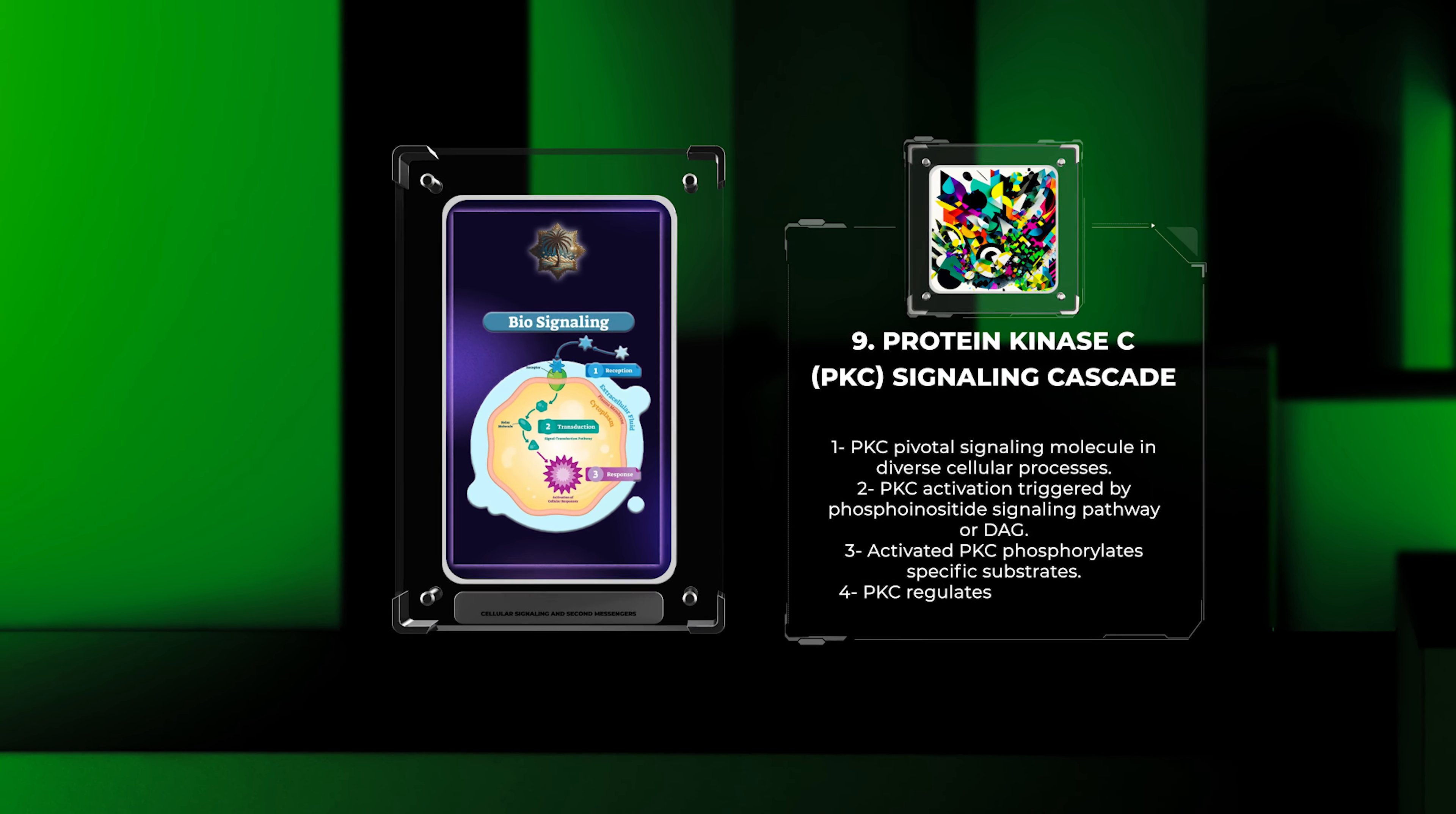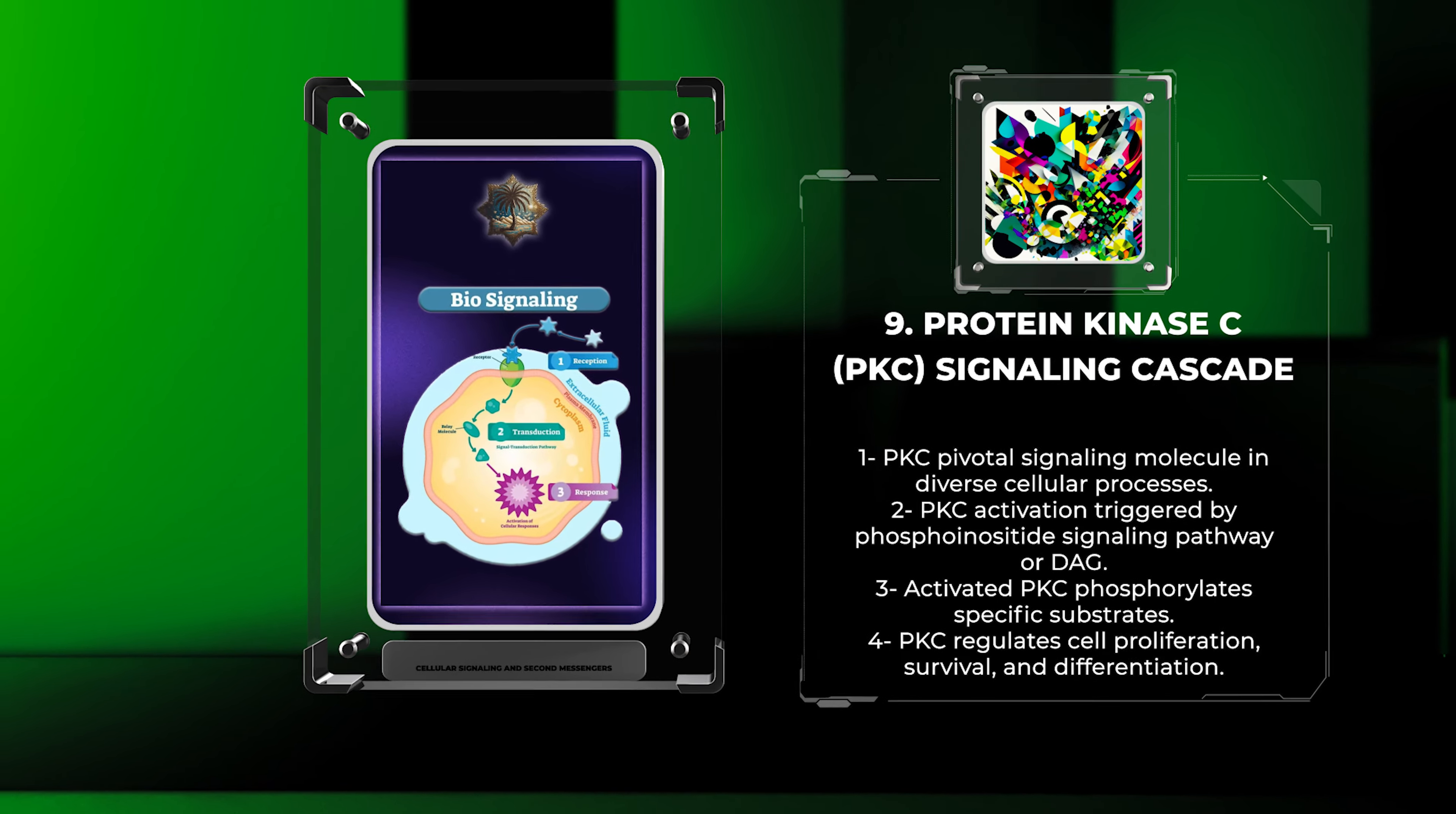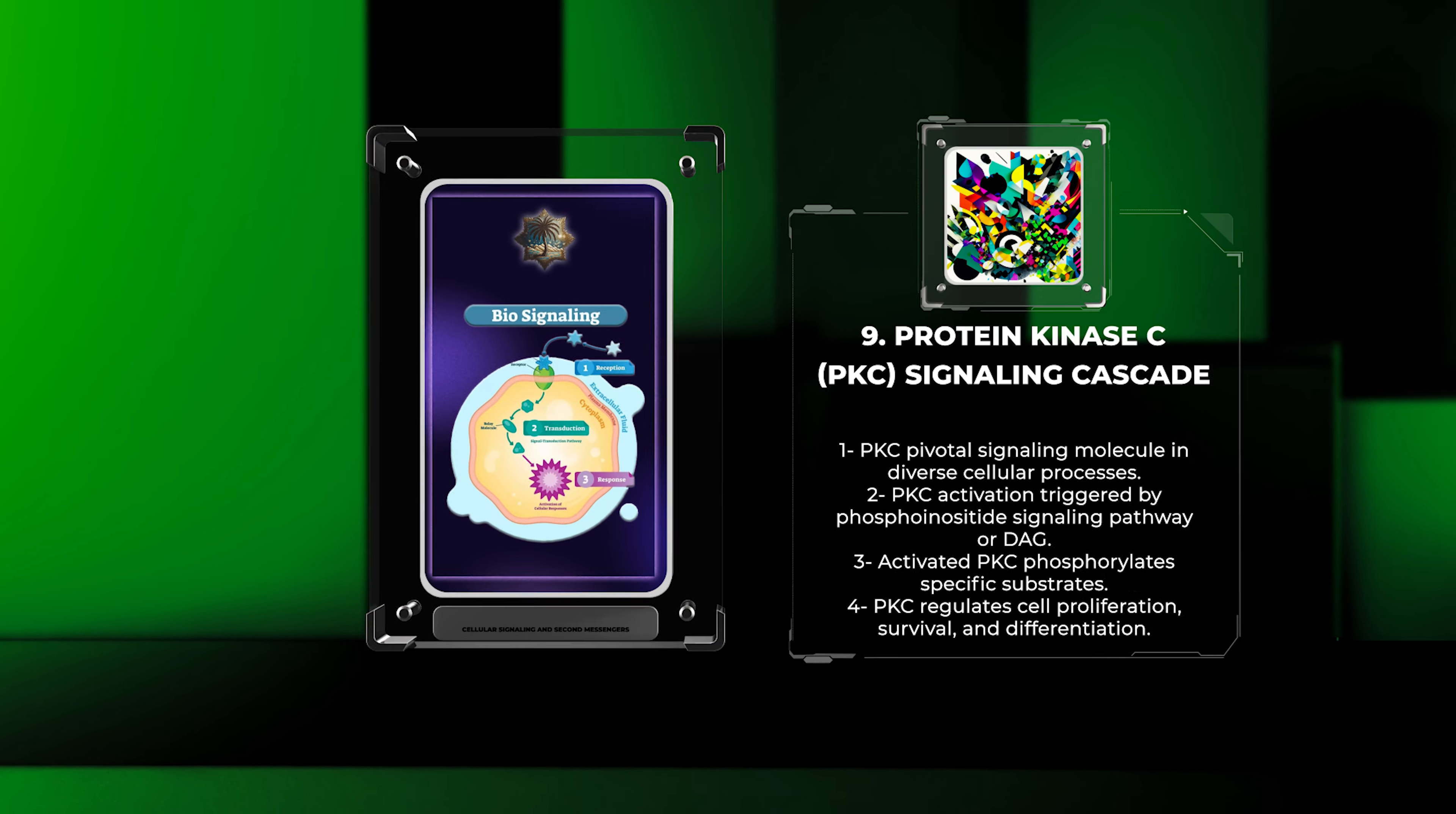PKC is another pivotal signaling molecule involved in diverse cellular processes. Its activation can be triggered by the phosphoinositide signaling pathway or through direct interaction with diacylglycerol, DAG. Activated PKC phosphorylates specific substrates, regulating cellular responses such as cell proliferation, survival, and differentiation.